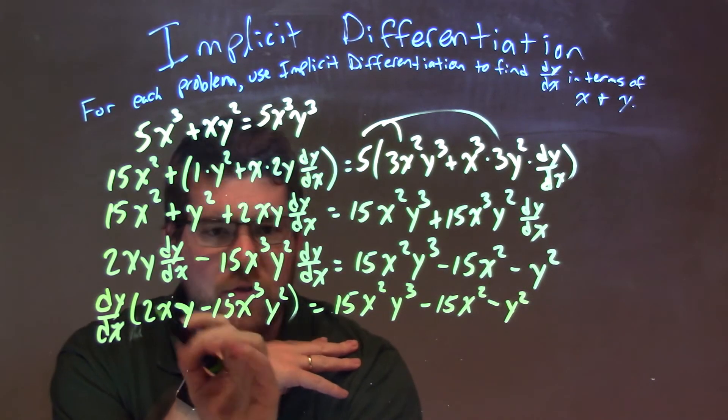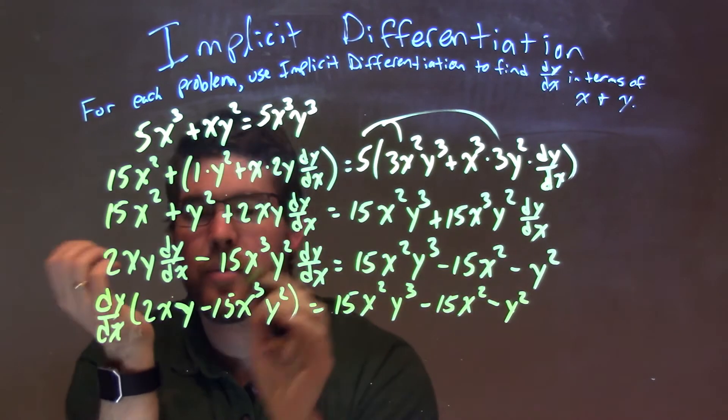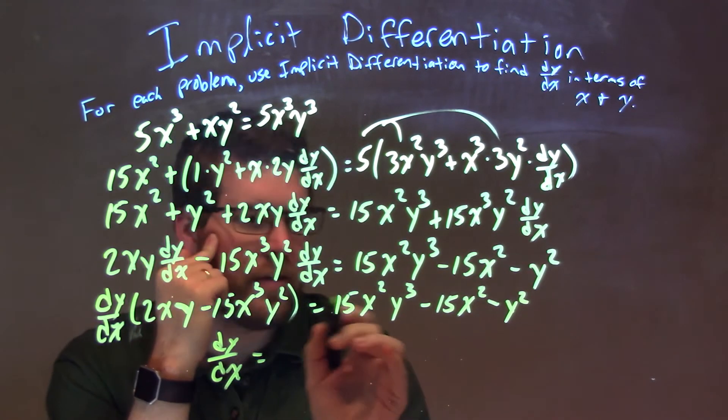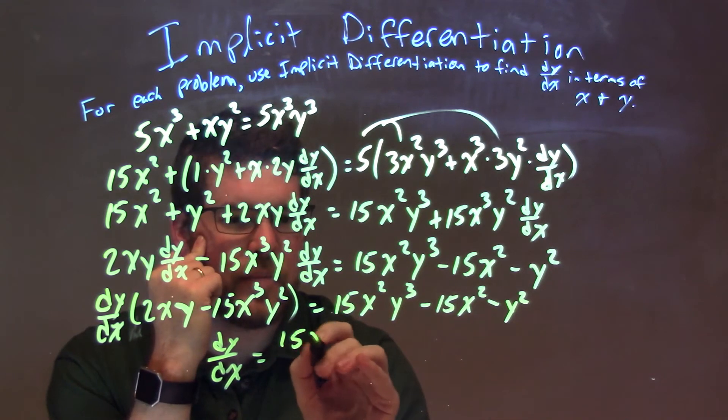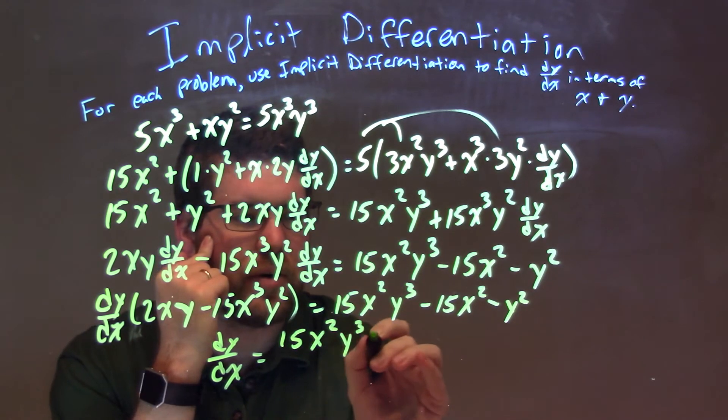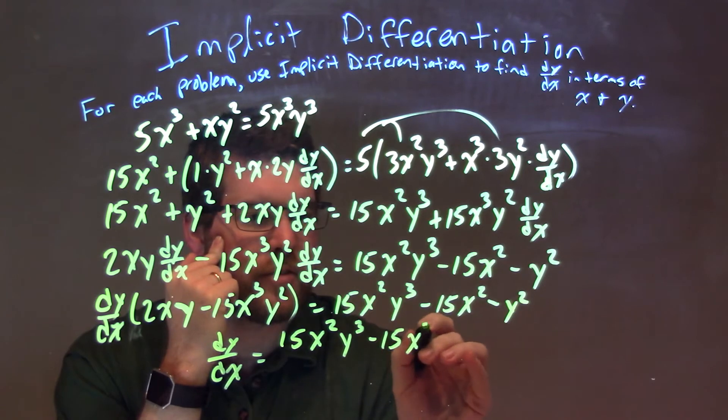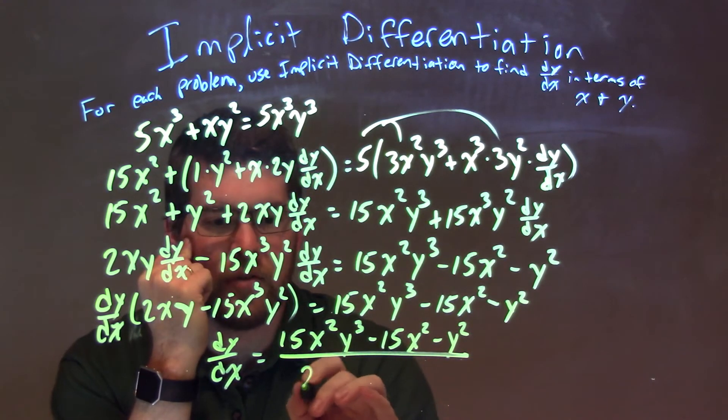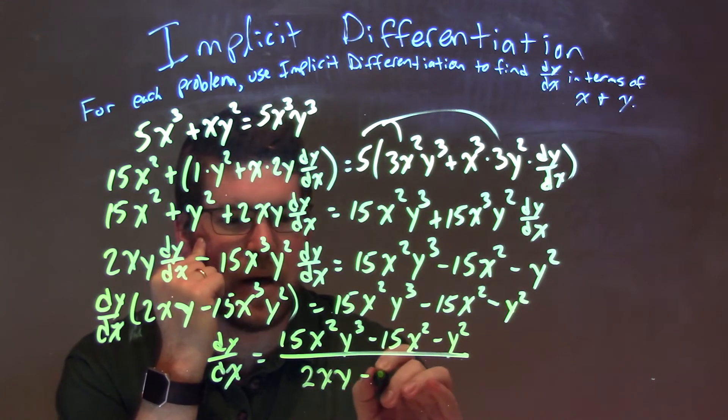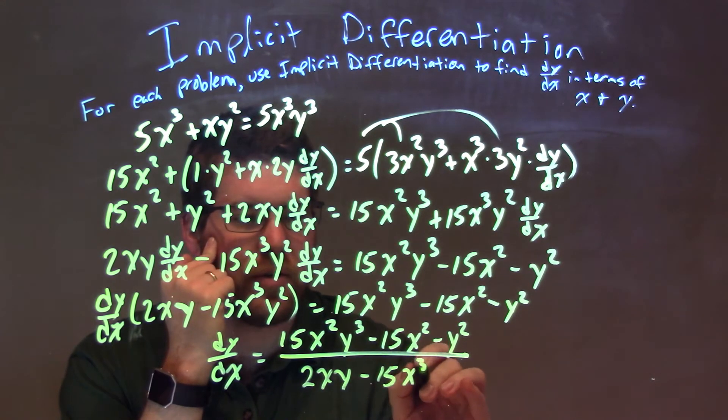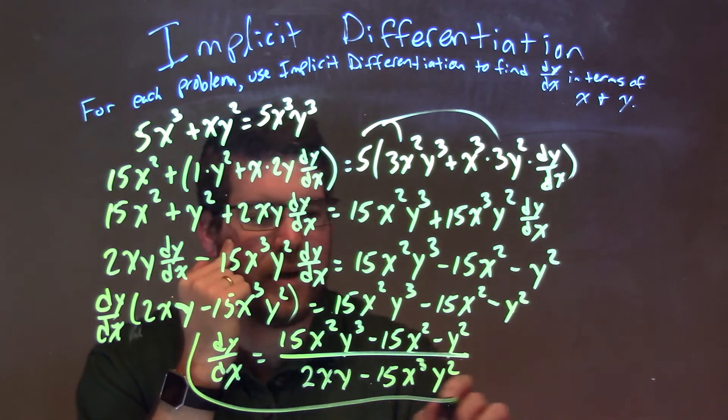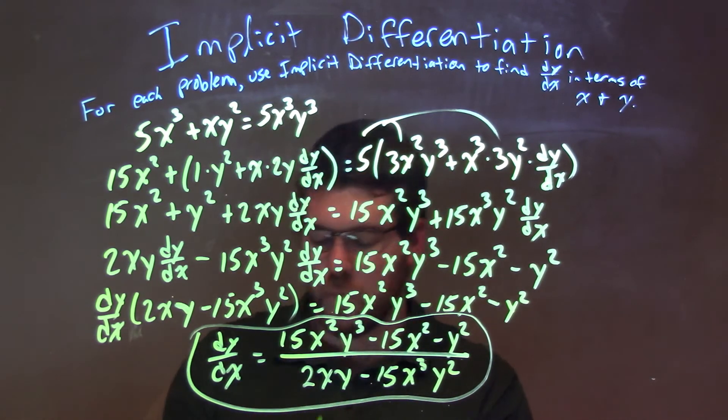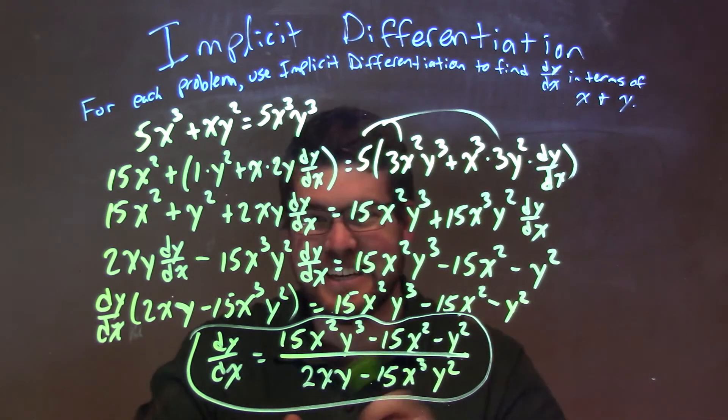So, now, I'm pretty much done. I'm just going to divide this whole parenthesis to both sides, and I have dy/dx by itself. So, dy/dx by itself is equal to, now, this is our numerator, 15x squared y to the third minus 15x squared minus y squared. All over my denominator, 2xy minus 15x to the third y squared. And that's good enough for me.